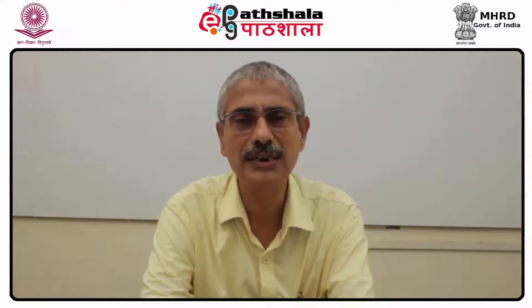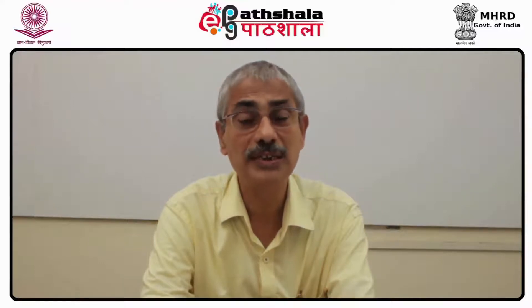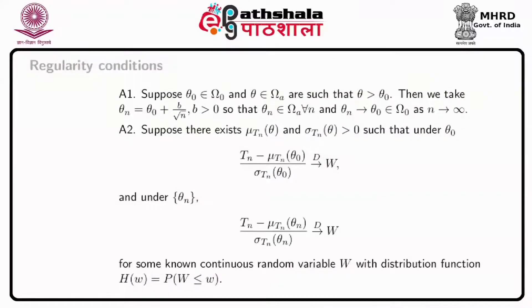When we use fixed alternatives, we cannot use such results. The regularity conditions are numbered A1, A2, A3, etc. First regularity condition: suppose theta naught belongs to omega naught and theta belongs to omega_a are such that theta greater than theta naught.